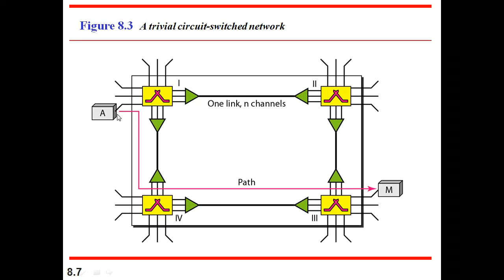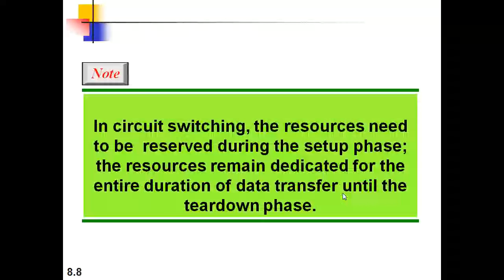So, here you can observe circuit switches. The end system A wants to communicate with the end system M. So, there will be a connection, circuit established between the end system A and the end system M. In this path, the actual communication takes place.